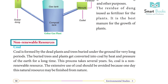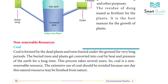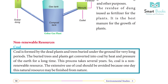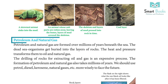Coal is formed by dead plants and trees buried under the ground for a very long period. The buried trees and plants get converted into coal by the heat and pressure of the earth over a long time. This process takes several years, so coal is a non-renewable resource. The extensive use of coal should be avoided because one day this natural resource may be exhausted.